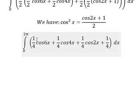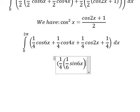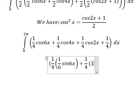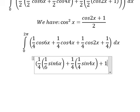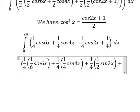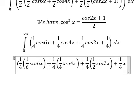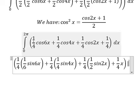So the integration of this one is about 1 over 6 sine 6x, the next one is about 1 over 4 sine 4x, the next one is about 1 over 2 sine 2x, and the last one we have 1 over 4x. And we put the bounds from 0 to 2π.